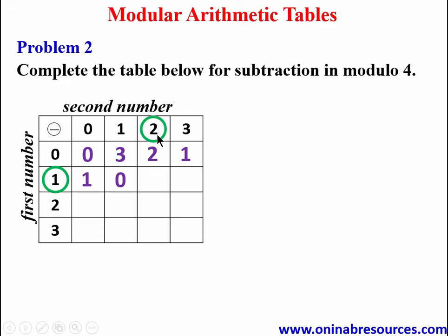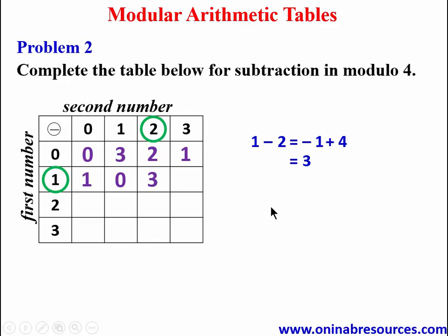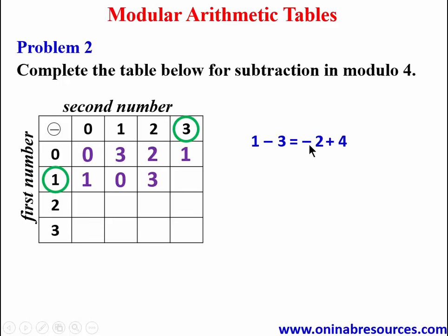Then 1 minus 2 gives negative 1. A negative value is not acceptable in this table, so we convert it to positive by adding 4: negative 1 plus 4 gives 3, and we record 3. Then 1 minus 3 gives negative 2; negative 2 plus 4 gives 2, so we record 2. We are done with that row.